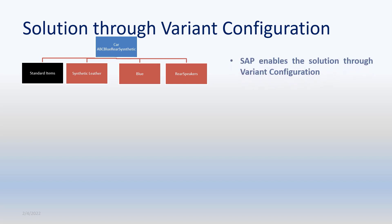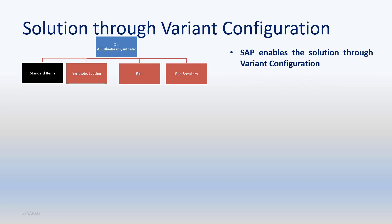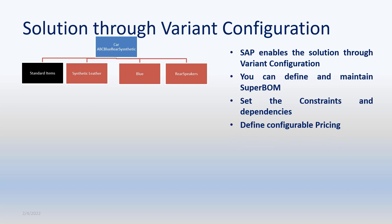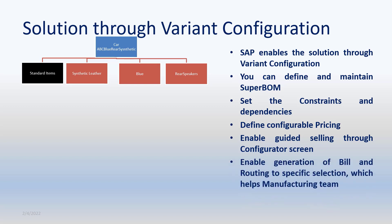In summary, SAP enables a solution for make-to-order manufacturing of multiple variants of the same product. You can define configurable BOMs and routings, define dependencies and constraints to facilitate selection and creation of the right BOM and routing, and define pricing at the configurable material level itself. You can facilitate guided selling through the Configurator, where the customer selects the right options and the right set of further options is populated accordingly. This enables dynamic generation of BOMs and routings according to customer selections, which go as input to the production team to make the right product asked by the customer.